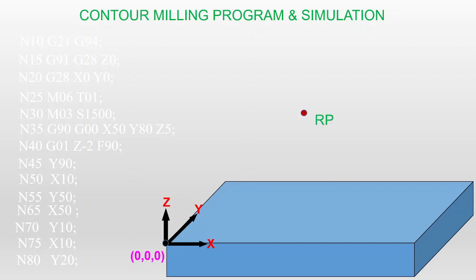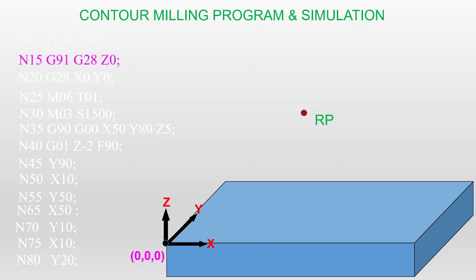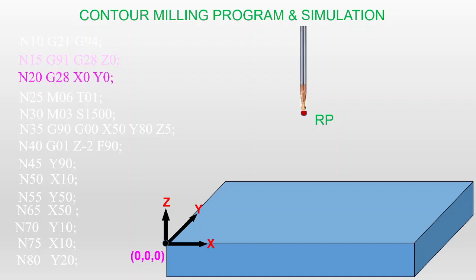I have identified the reference point for this machining — the tool will start from the reference point. The first block of code is N10 G21 G94 — G21 for metric units and G94 for the milling feed rate mode. Next: G91 G28 Z0 — G28 is the home position, so first we send the tool to the home position. G91 is incremental data and G90 is absolute data. After sending the tool to the home position, the workpiece is also sent to home position at X0 Y0.